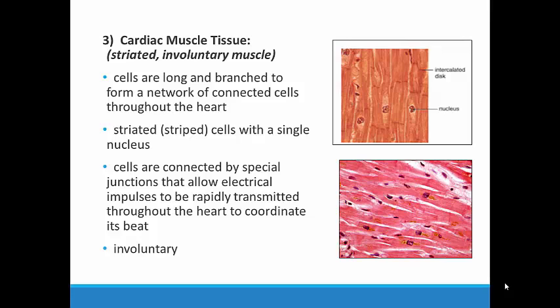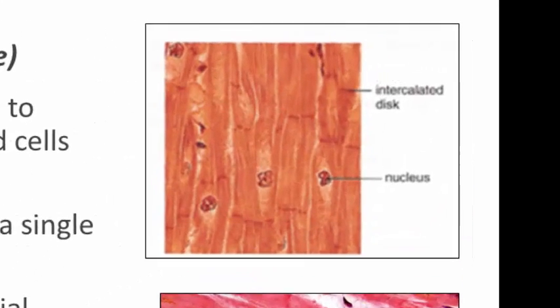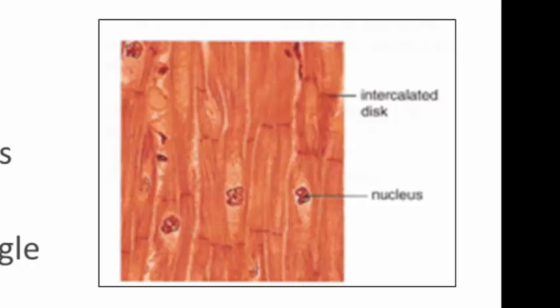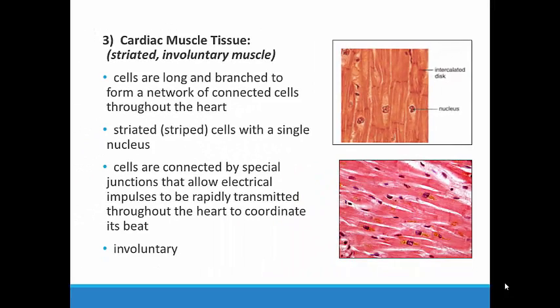The final type of muscle tissue is called cardiac muscle and it is found exclusively in our heart. This type of muscle is striated and involuntary, a different combination than both skeletal and smooth muscle. The cells are long and branched together to form a network, which is actually very important in coordinating the electrical impulses that initiate the heartbeat. The cardiac muscle tissue has a striated or striped appearance with a single nucleus in each cell. Like smooth muscle, cardiac muscle is involuntary, which means that an organism doesn't have to remember to contract the heart — the body takes care of this on its own.